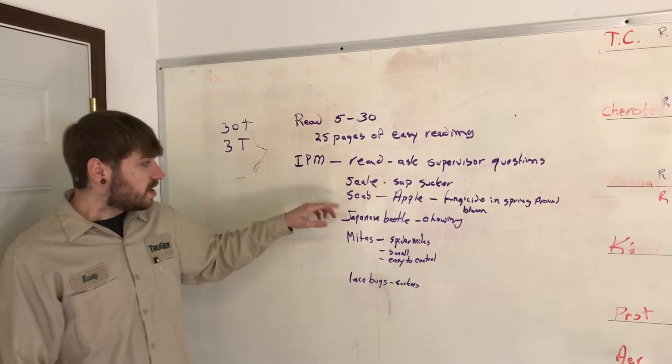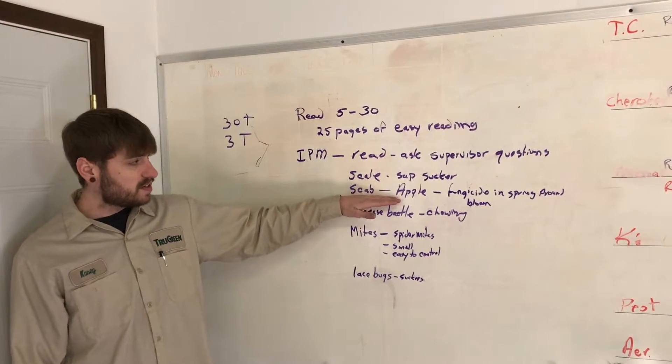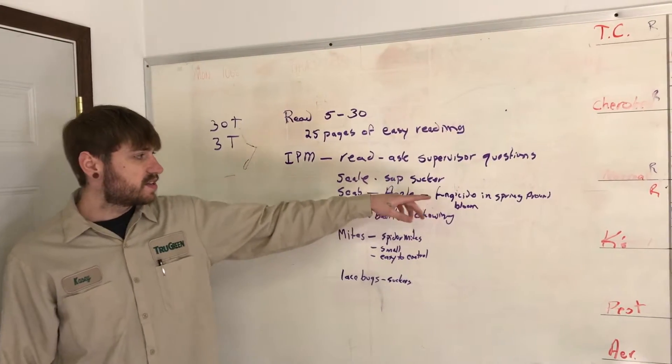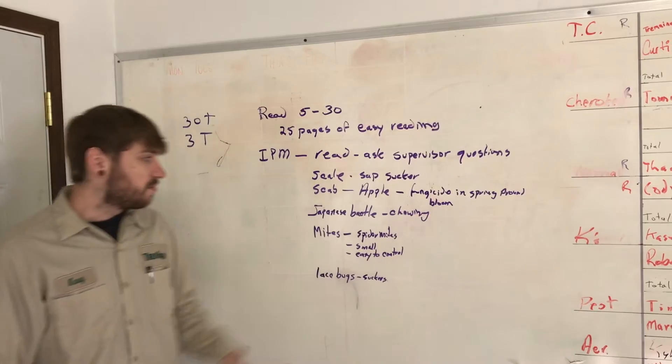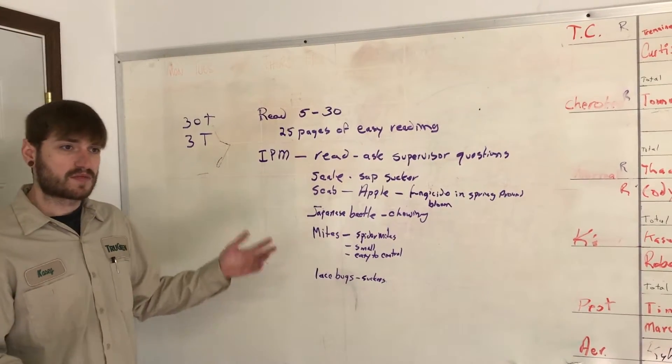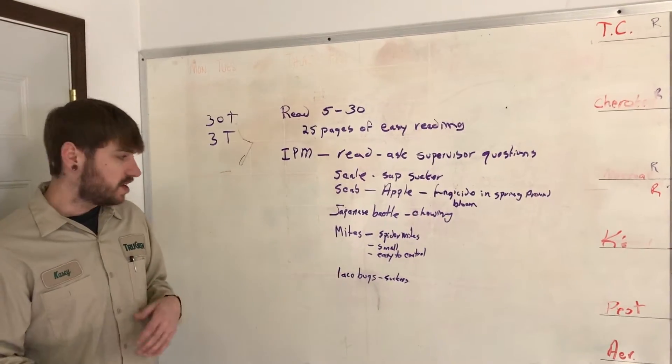Scab. Scabs are primarily found in apple trees. It's a fungus that is around in the springtime, especially around the bloom. The best way to go about that is to pre-treat it rather than treat it.